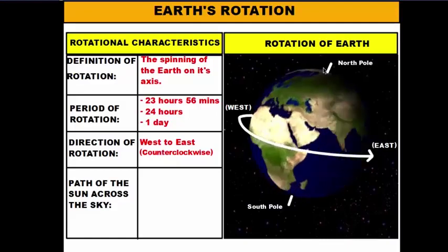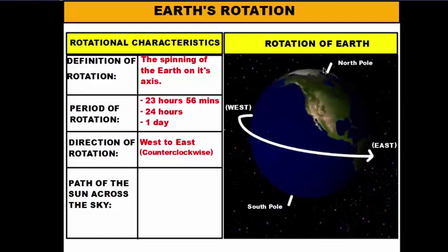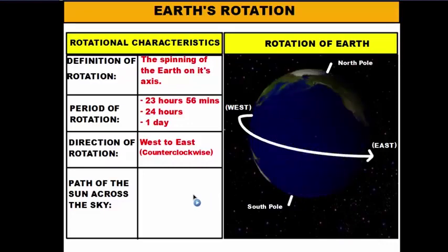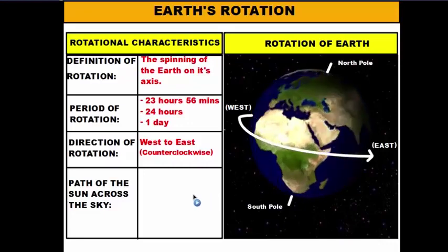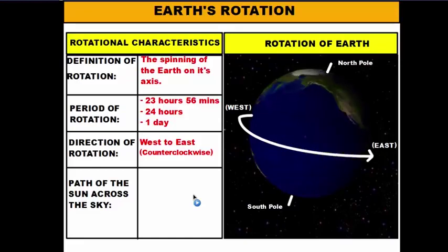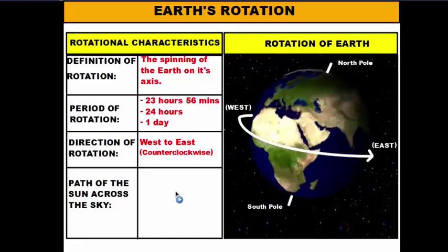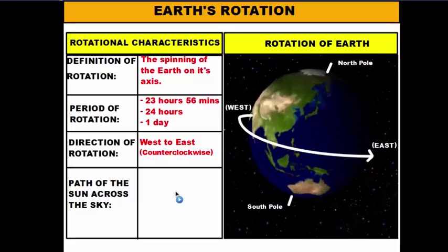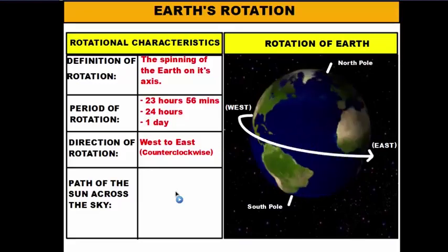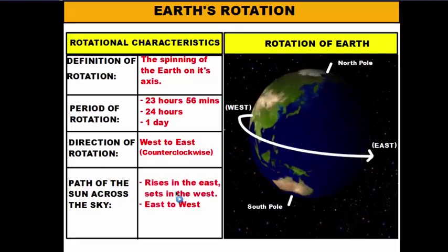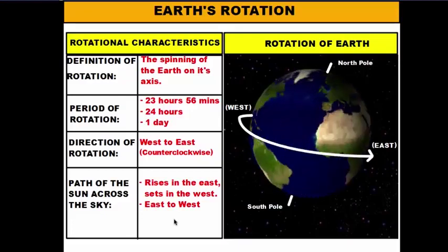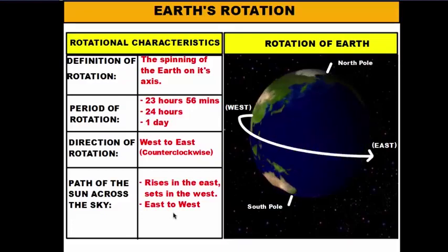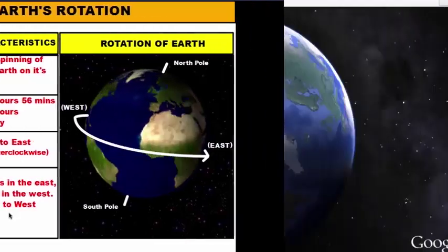If you look at this rotation from above the north pole, you'll see that it goes in a counterclockwise direction. The rotation of the earth affects the path of the sun across the sky, and that affects where the sun rises and sets. Because of this counterclockwise, west-to-east rotation, our sun is always going to rise in the east and set in the west.